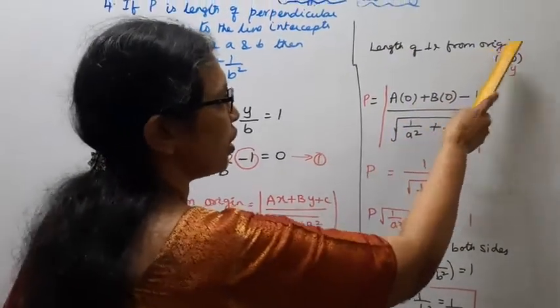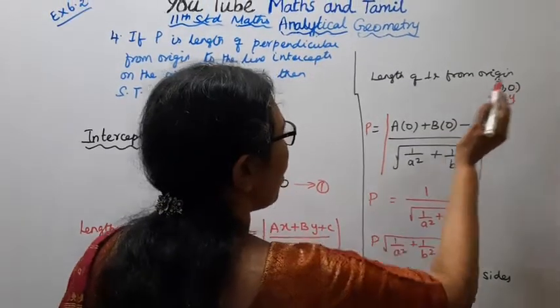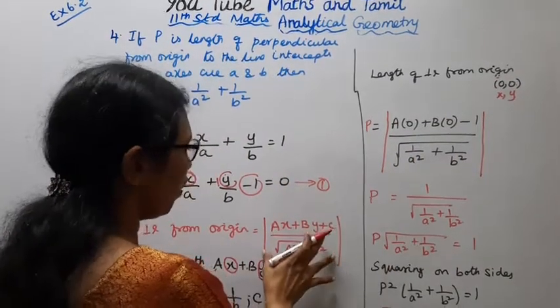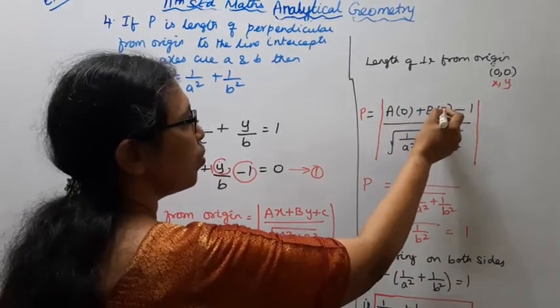From origin, coordinates are (0, 0). Applying the formula: x equals 0, y equals 0.